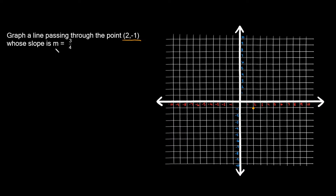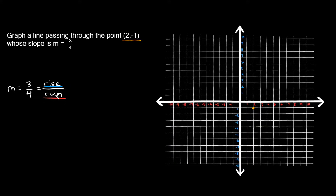The other thing given to us is the slope, which is equal to 3 over 4. The most basic definition of slope is that it's equal to the rise over the run. The rise tells us how many spaces the slope changes vertically — up and down. The run tells us how much the slope changes horizontally — side to side.